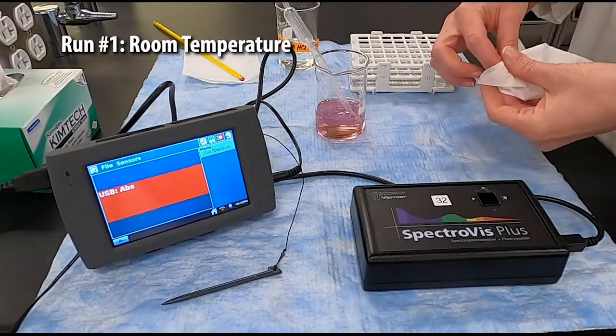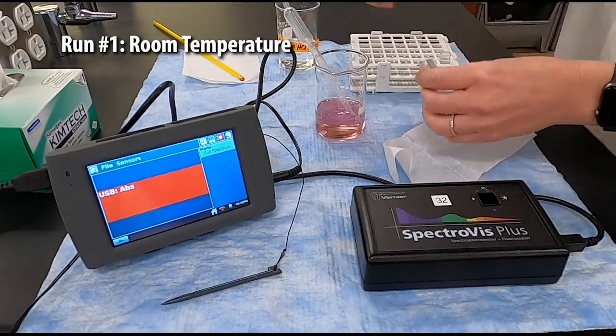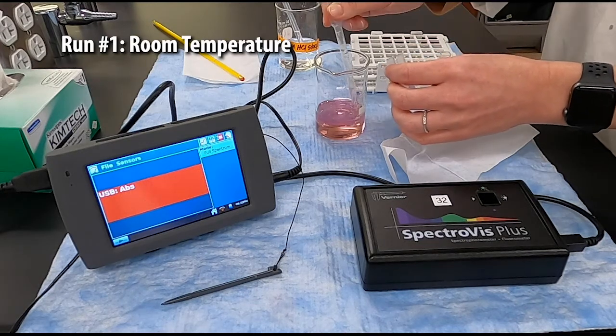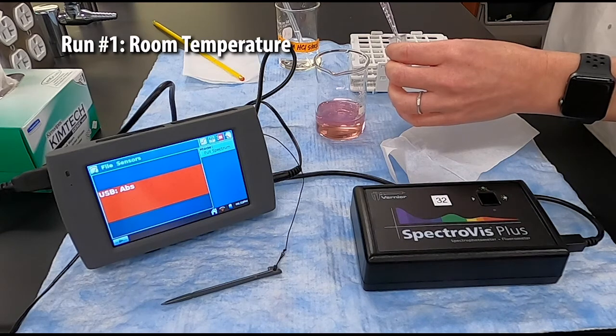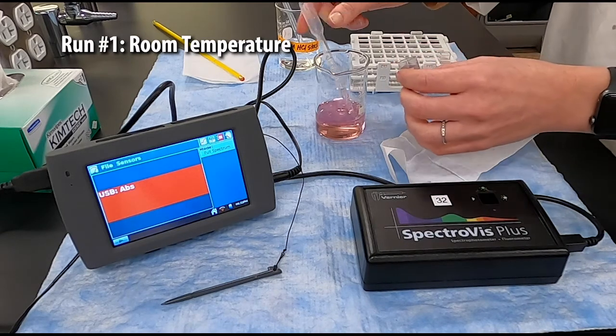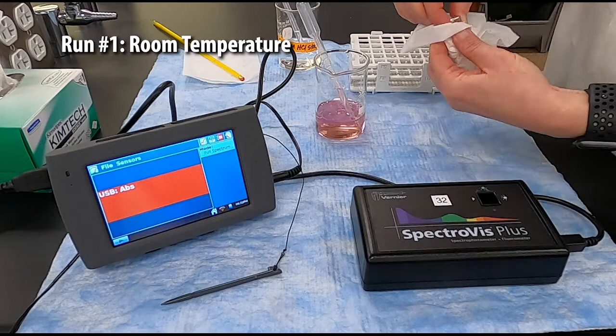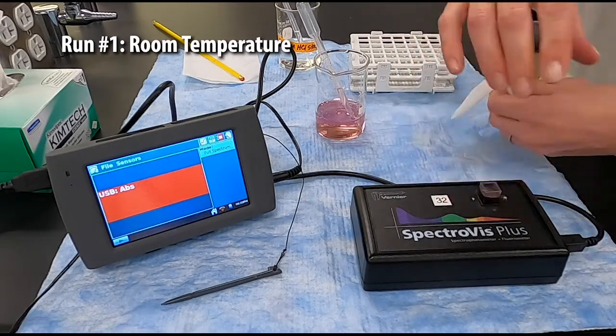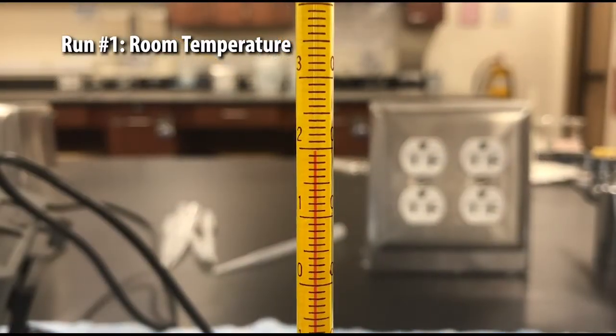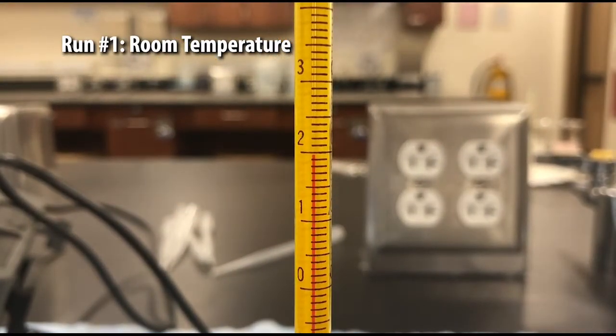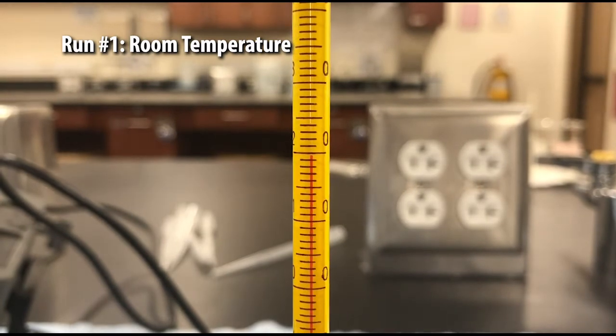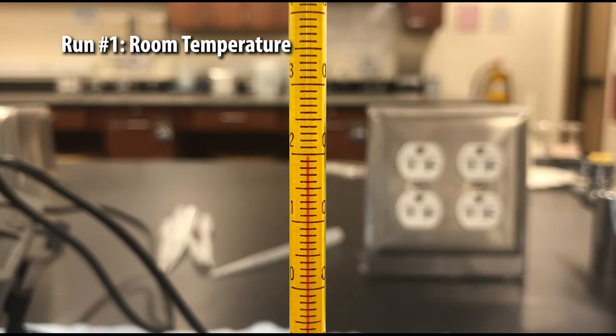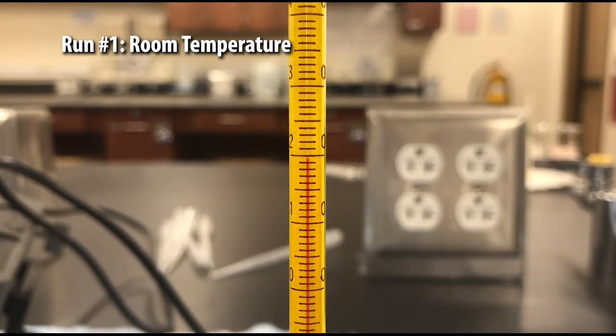The first solution we're going to take the spectrum of is our room temperature solution because that's the easiest. Fill a cuvette about three-quarters of the way full with our solution that we prepared. For each run, you're going to want to measure the temperature. This thermometer is showing us what the temperature is of our room temperature solution. Be sure you take note of what each mark is worth on this thermometer and how many decimal places you're going to record.